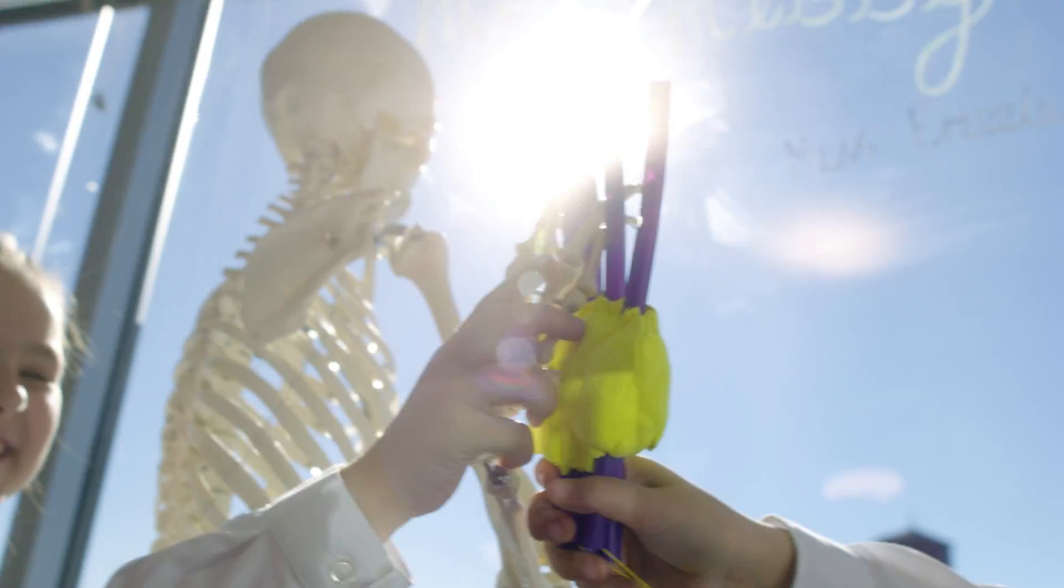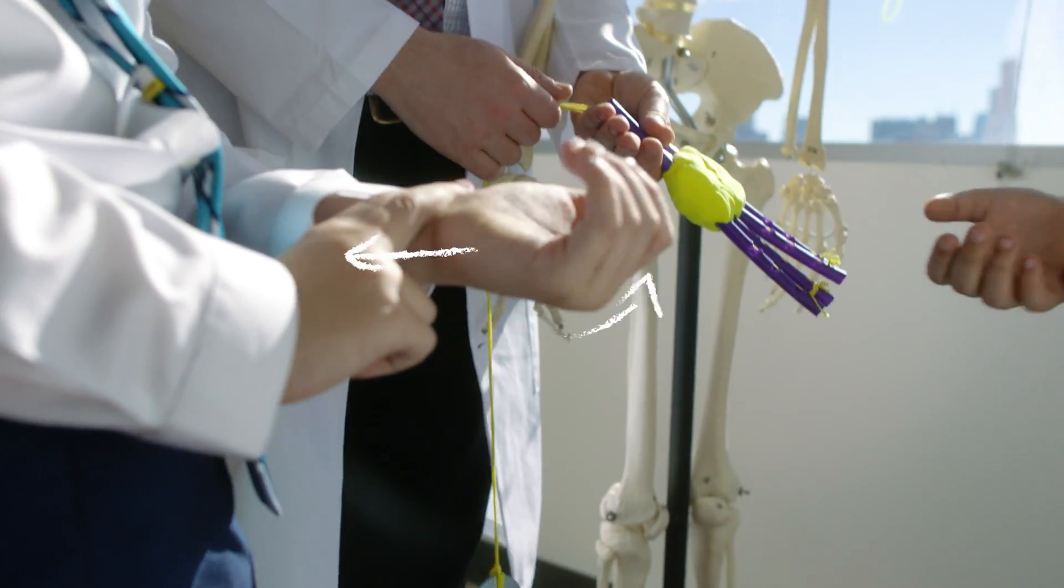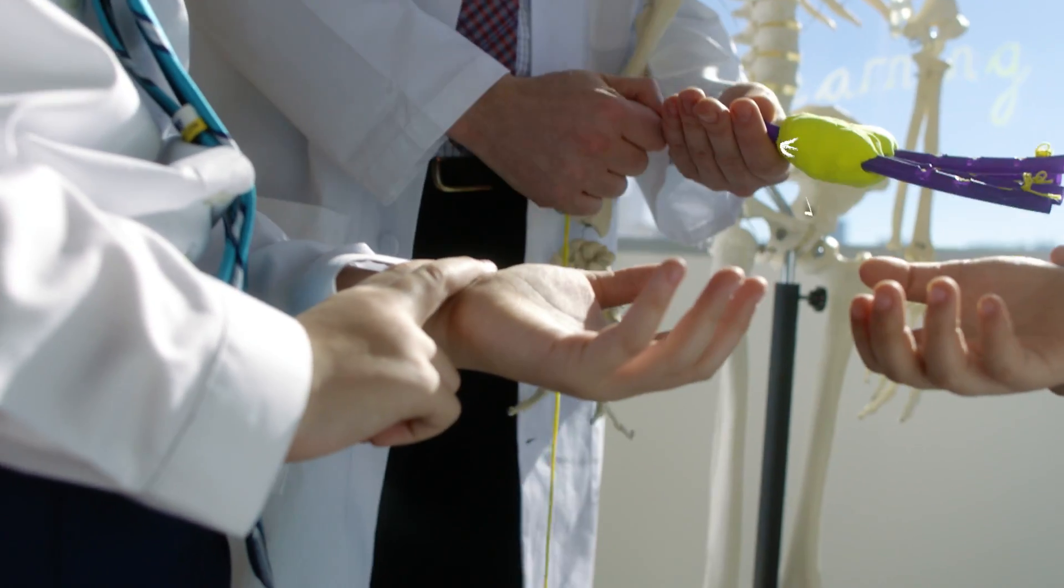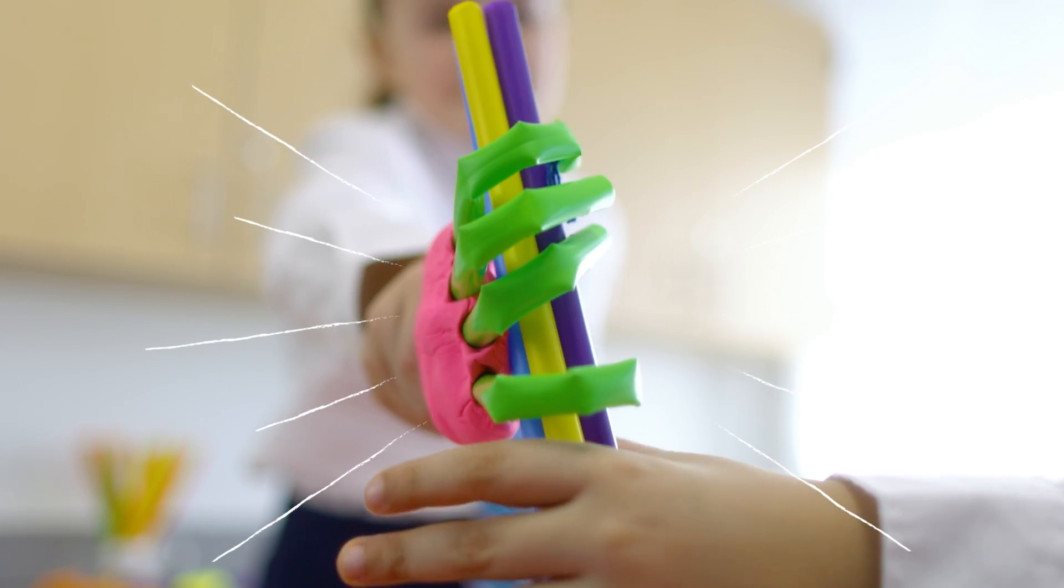Our skeleton protects us, gives us support and helps us to move. A human skeleton is moved when muscles contract and pull on tendons, which are attached to bones. Engineers use this knowledge to make prosthetic limbs and robots.